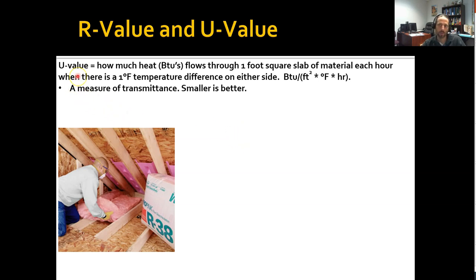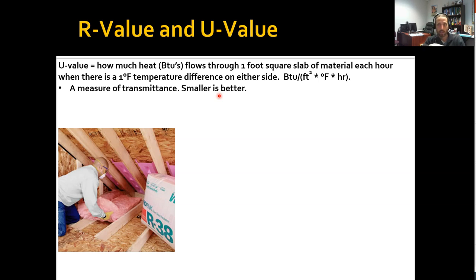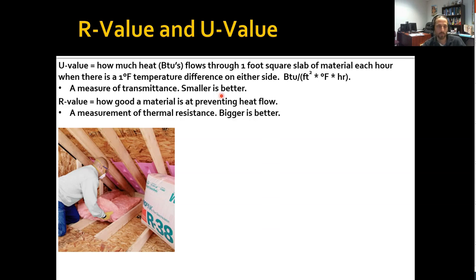Just as a review: U-value is really what we care about primarily in terms of insulation because it's what we use for our calculations, as you will see. U-value is a measure of transmittance, and all else being equal, you want a smaller U-value. As U goes down, less heat is transmitted. So you want small U-values.